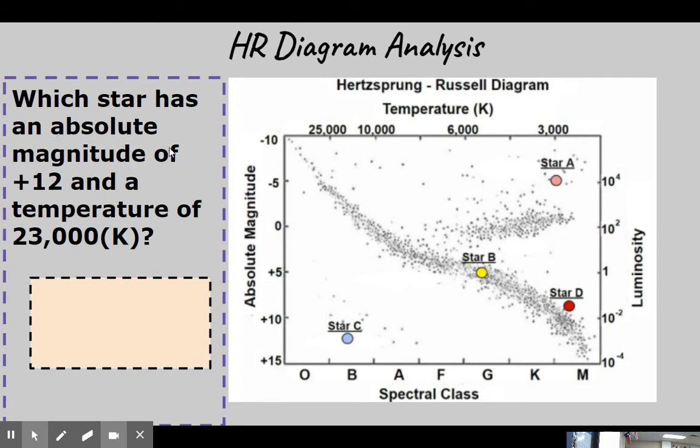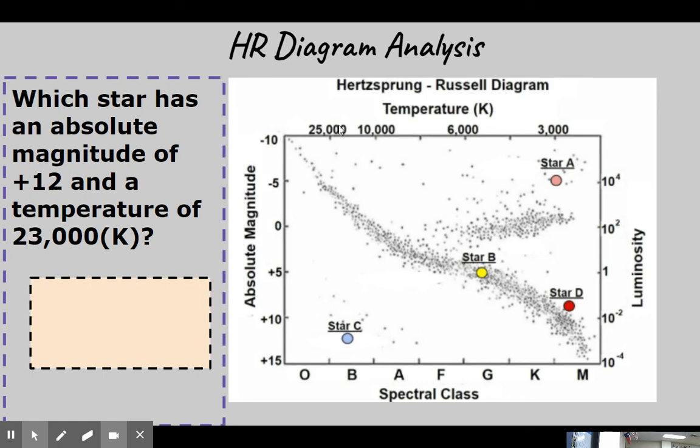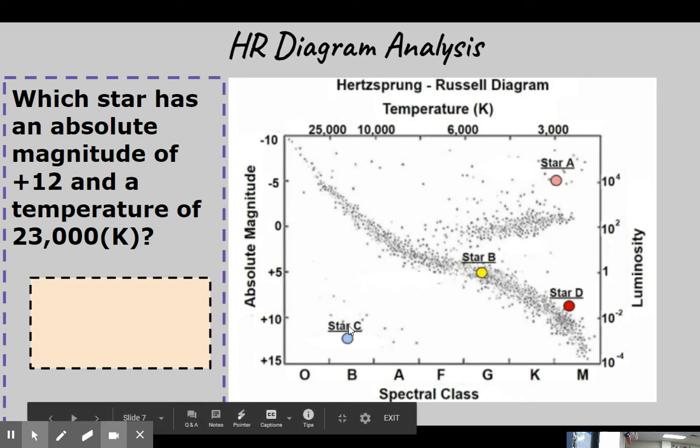Which star has an absolute magnitude of plus 12 and a temperature of 23,000 Kelvins. So which star has an absolute magnitude of 12? So let's find absolute magnitude, and we're looking for positive 12. So our numbers are increasing down this way. So if it's going 10, 11, 12, 13, 14, 15. So absolute magnitude of 12 would be star C. Its temperature. Here's 25,000, so we're going backwards 24,000, 23,000. Star C.